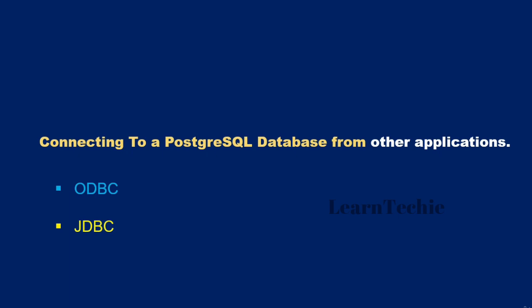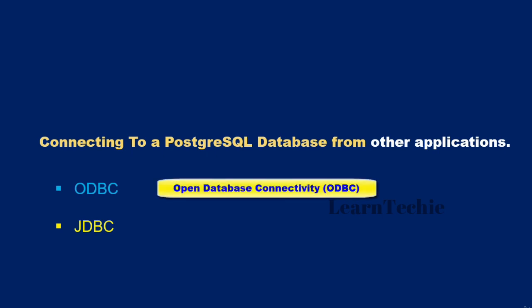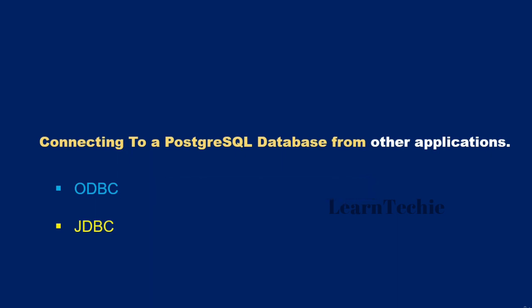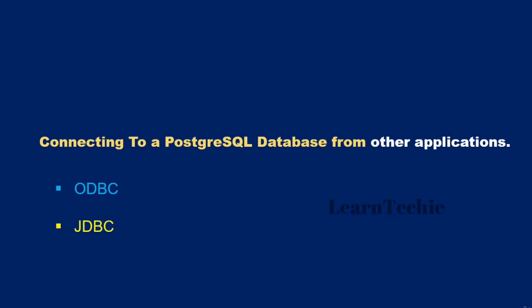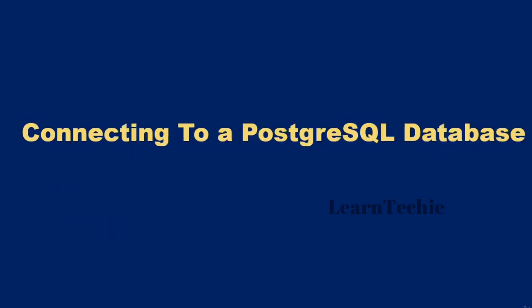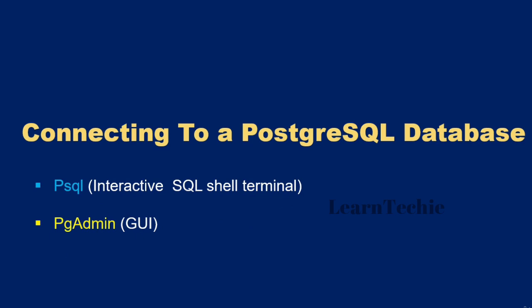ODBC stands for Open Database Connectivity — it is an open-standard API used for accessing a database. JDBC stands for Java Database Connectivity, which is an API for the Java programming language that defines how a client can access a database. In this video, you have learned how to connect to a PostgreSQL database server using different client tools including PSQL and PGAdmin, and I briefly introduced you to ODBC and JDBC as APIs that can be used to connect from other applications.